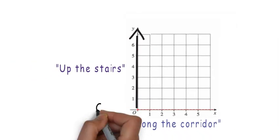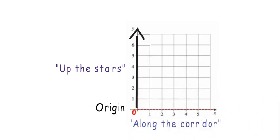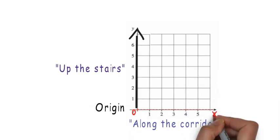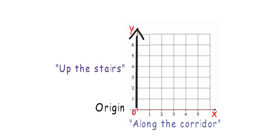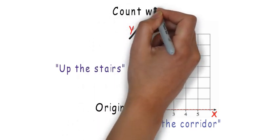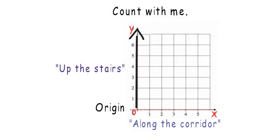The x-axis starts at point O and goes 1, 2, 3, 4, 5 and so on. The y-axis starts at O and goes up 1, 2, 3 and so on.